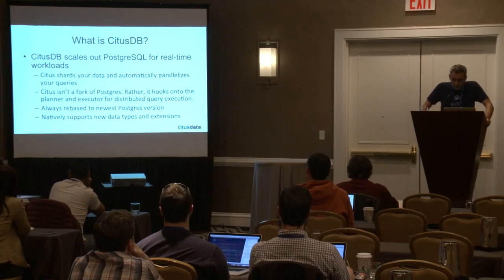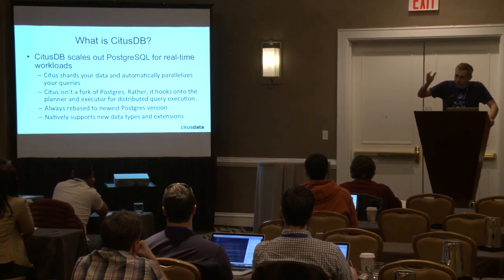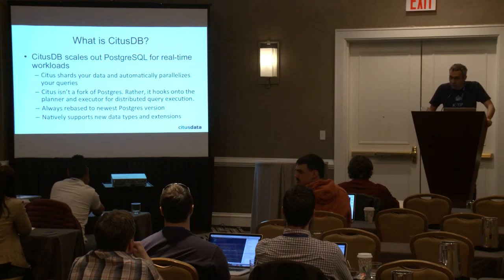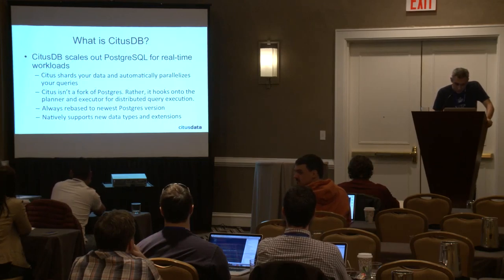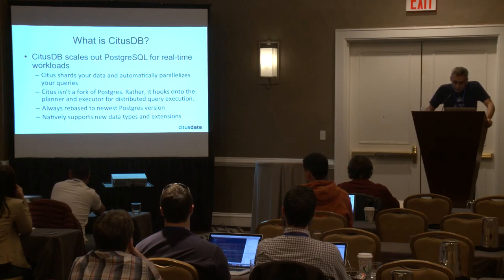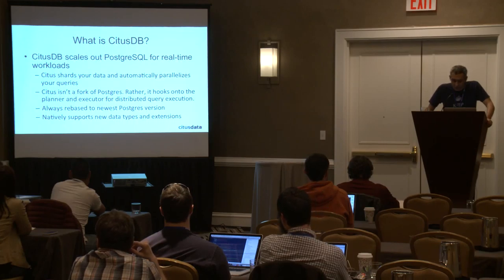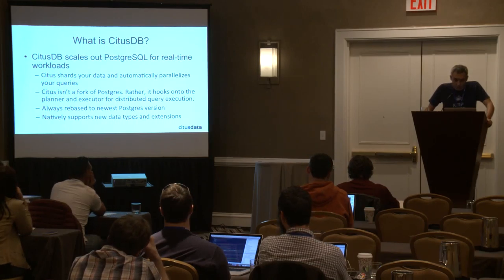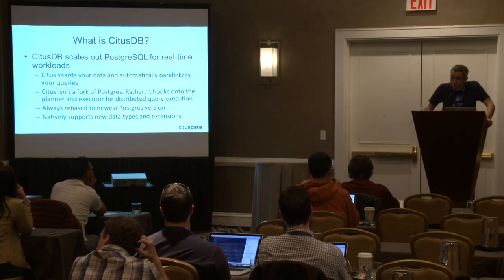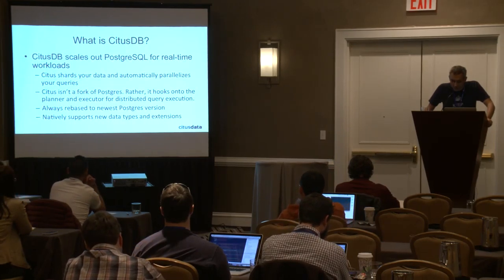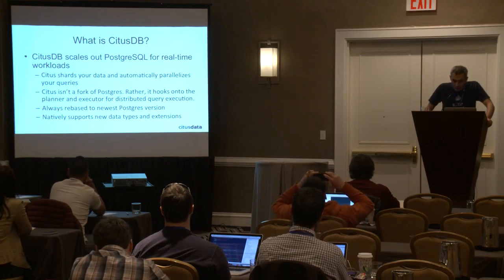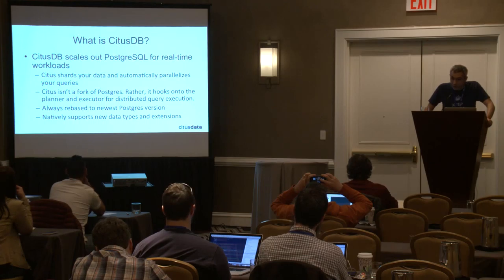CitusDB shards and replicates your data, and when you send a query to CitusDB, it automatically parallelizes the query across the machines in the cluster. CitusDB isn't a fork of PostgreSQL — we didn't take a particular PostgreSQL version, say 8.0, fork it, and never looked back. We looked into the integration points within PostgreSQL and the APIs that PostgreSQL provides. You can almost think of CitusDB as a distributed query planning and execution engine that uses the planner and executor hooks within PostgreSQL.